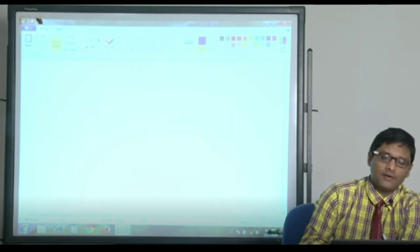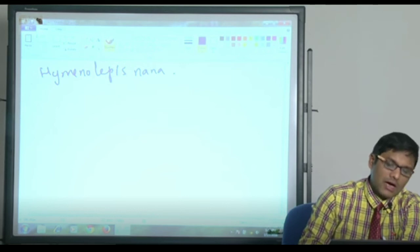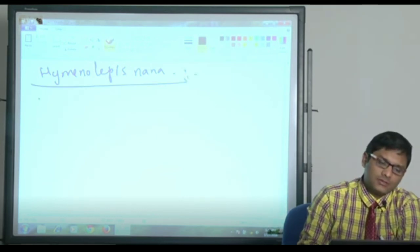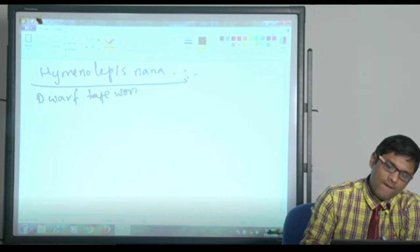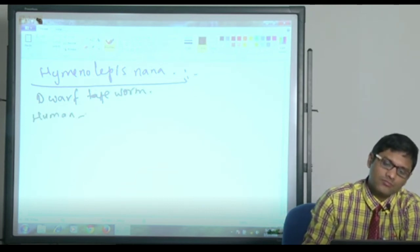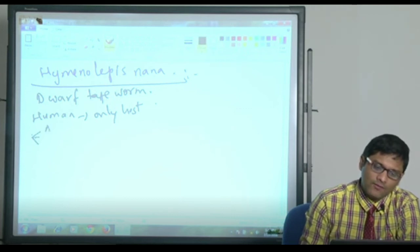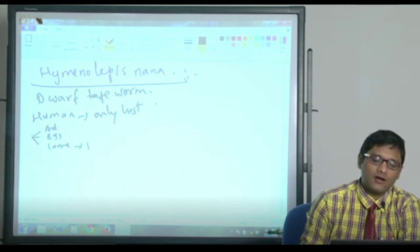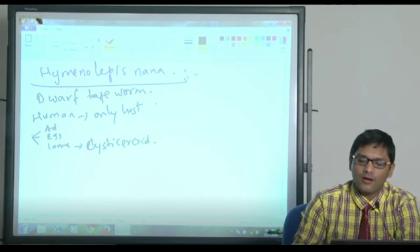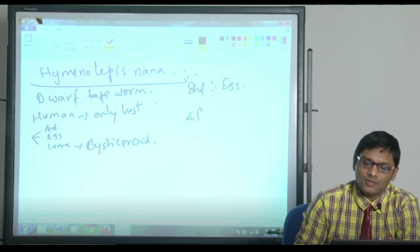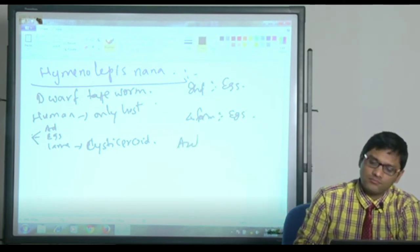Hymenolepis nana, otherwise called dwarf tapeworm. Here humans are the only host. It exists in three forms: adult, egg, and larva. Larva is called cysticercoid. Here the infective form is egg, diagnostic form is also egg. When infective form and diagnostic form are the same, what is seen? Auto-infection.